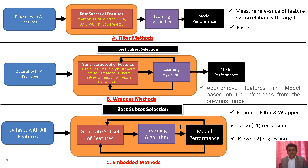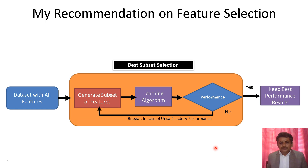So basically we have three types of feature selection methods, and each method has its own advantages and disadvantages. The ultimate objective is to select a subset of features that significantly enhances the performance of the model with a lesser number of features. This slide shows my recommendation on feature selection.